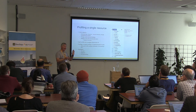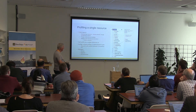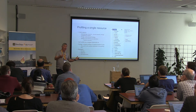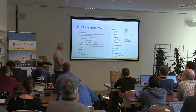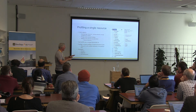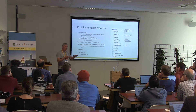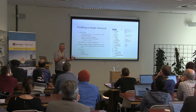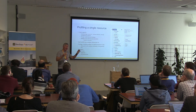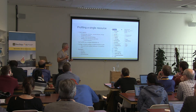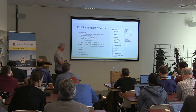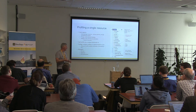You might limit names — FHIR says a patient can have more than one name, but you might say they can only have one. There's changing the value set — marital status in FHIR is a particular set of values, but in your country you have a different set. You might remove photo because you simply don't support it. And you can add an extension to support something like ethnicity.